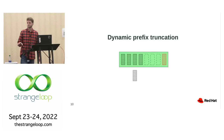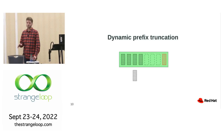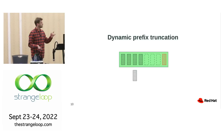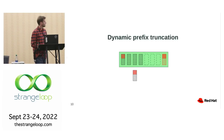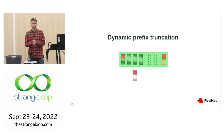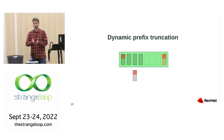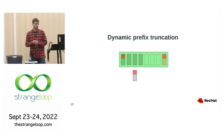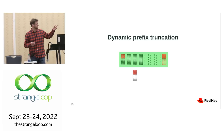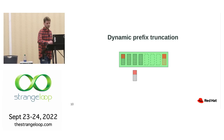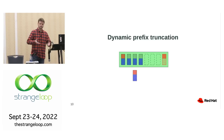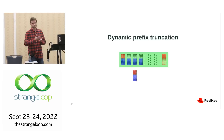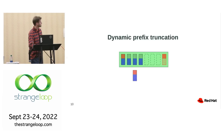If we're hesitant to modify anything on the data page, we can still leverage optimization via dynamic prefix truncation. We compare a search value with the fence keys, notice there's a common prefix, and then we don't have to compare that part — only the rest of the values. Via this, we save a little performance on the comparison operation.